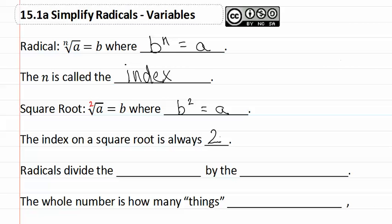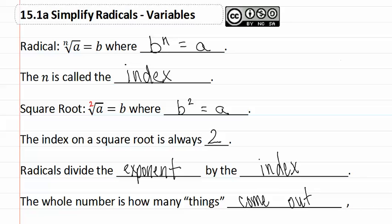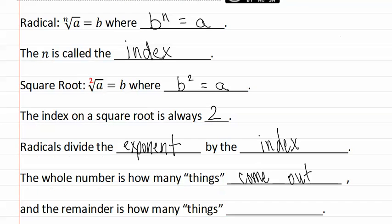Radicals divide the exponent by the index. The whole number is how many things come out, and the remainder is how many things remain inside.